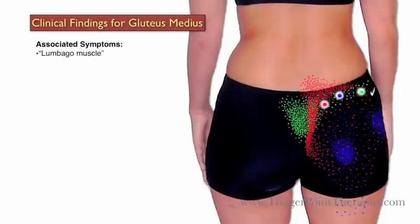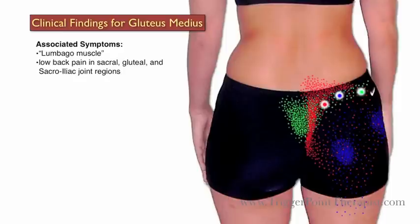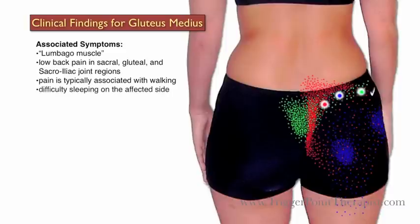Clinical findings for gluteus medius trigger points: Dr. Travell calls this muscle the lumbago or low back pain muscle. Clients with active trigger points here will commonly complain of low back pain in the sacral, gluteal, and SI joint areas. The pain is typically associated with walking, and they may also have difficulty sleeping on the affected side.